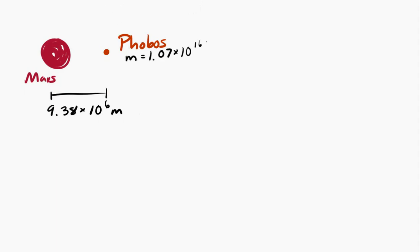So Mars. Mars has two moons. One of them is Phobos. So let's find the gravitational force on Phobos by Mars. And I'll give you some information. The distance between the center of Phobos and the center of Mars is 9.38 times 10 to the 6 meters. Okay. The mass of Phobos is 1.07 times 10 to the 16 kilograms. The mass of Mars is 6.42 times 10 to the 23 kilograms.